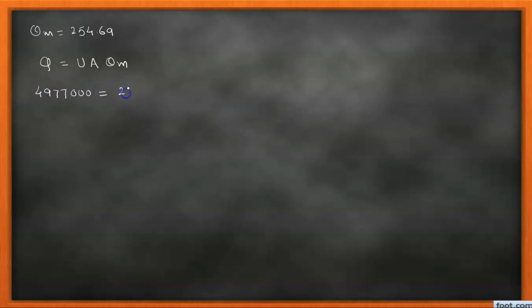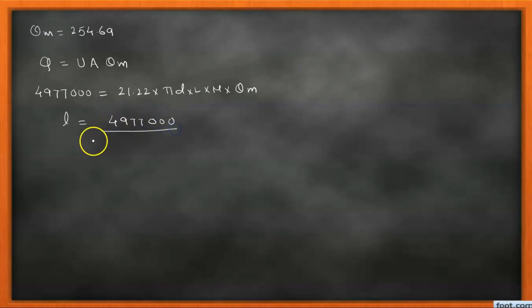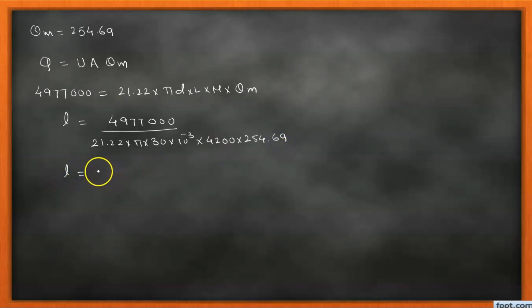Finally, using Q = U × A × θ_m where A = π × D × L × N, we solve for L: L = Q / (U × π × D × N × θ_m) = 4,977,000 / (21.22 × π × 30 × 10⁻³ × 4200 × 254.69) = 2.31 m. So the required tube length is 2.31 meters. Thank you for watching this video.